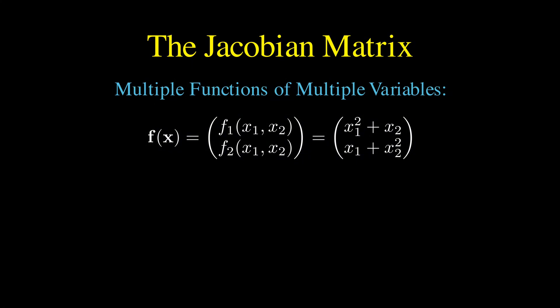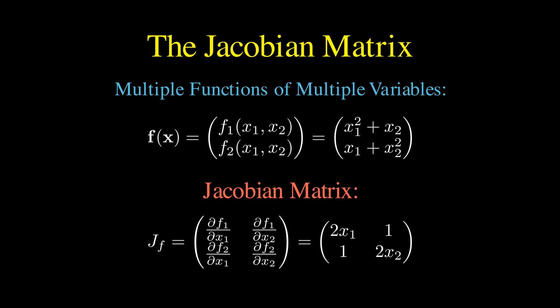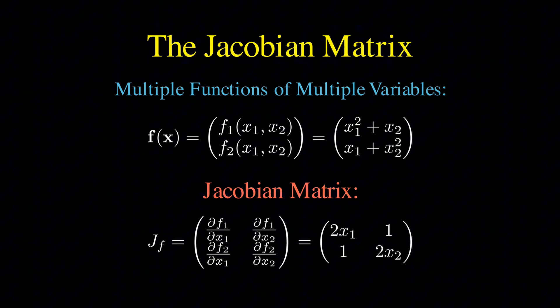This scenario gives us a mapping from a two-dimensional input space to a two-dimensional output space. The Jacobian matrix elegantly captures all possible derivative relationships in this multifunction, multivariable system by organizing them into a systematic grid.